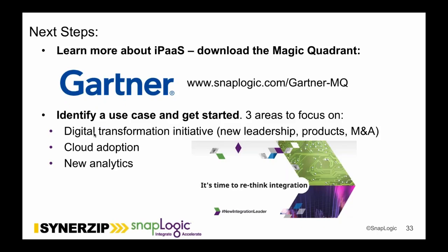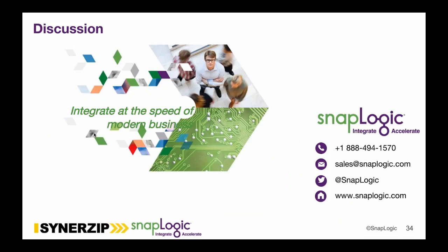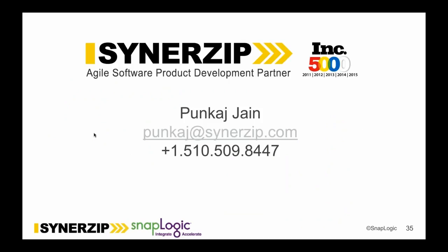There are some good vendors and good choices out there — the important thing is making the right choice for your use cases. That wraps up what we had prepared. You can go to SnapLogic and download the Gartner Magic Quadrant. Three areas to focus on: digital transformation is a real driver for iPaaS; cloud adoption, of course, is a driver; and modernizing your analytics infrastructure is another driver to consider adopting a modern hybrid integration platform and moving away from legacy ETL and enterprise service bus thinking. With that, I'd like Pankaj to take us through a bit on CenterZip.